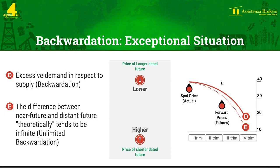The shape of the futures curve is important for speculators and investors who want to cover themselves against risk by purchasing raw materials. It provides important information on the state of the raw material on the market, both at the present date and in the coming months. A backwardation state, for example, may suggest in the near term a shortage of supply that pushes the current price upwards, or it may be the result of a forecast of a generous supply in the future that causes the price to drop in the longer term.